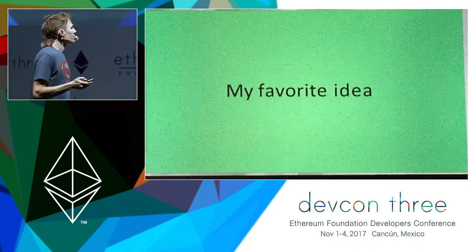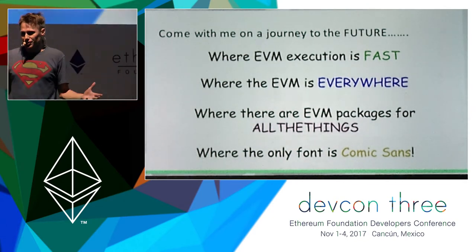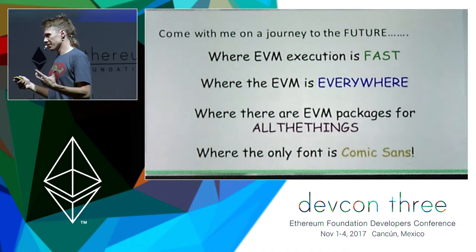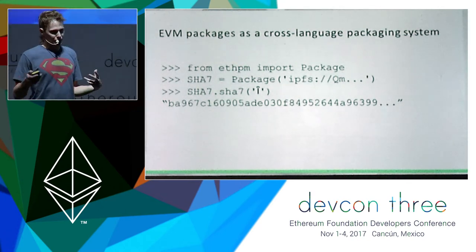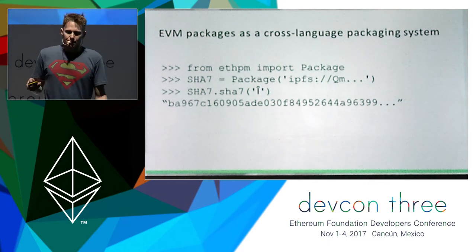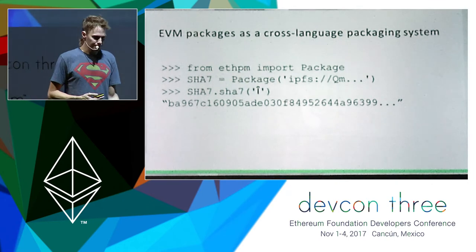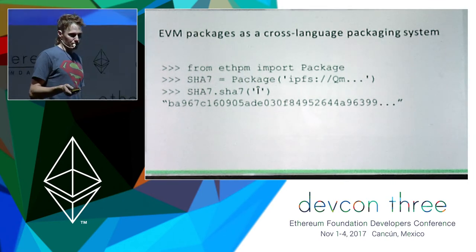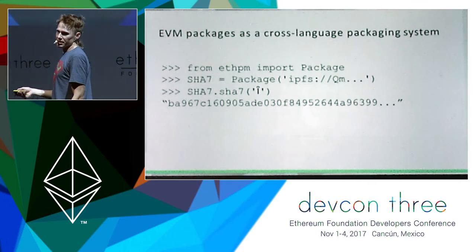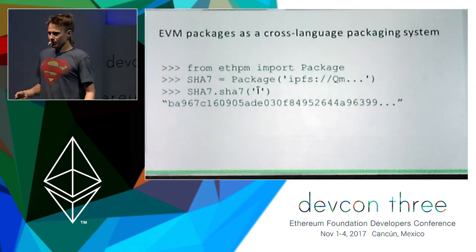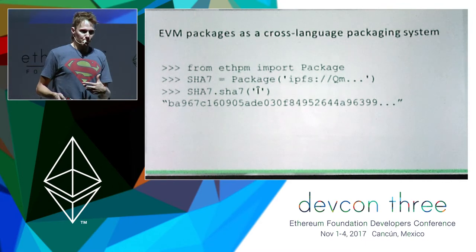But this right here is my favorite idea. Come with me on a journey to the future where the EVM is everywhere, where there are packages for all kinds of things, and where the EVM is really fast. I think EVM packages are capable of being a cross-language packaging system — we can use the EVM implementation natively in our code. This is an imagined Python library that makes use of some mystical SHA-7 package. Rather than needing an implementation of SHA-7 in Python, we use the EVM implementation in our code. That means we can have single, well-tested, battle-tested implementations that are usable across many different languages.